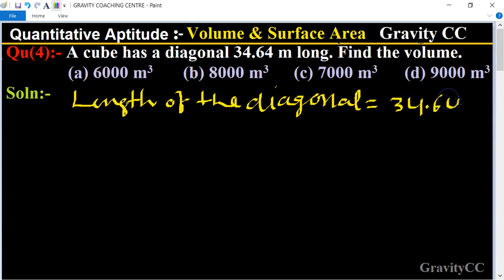34.64. And we know that the formula for the length of the diagonal of a cube is √3 × a equals 34.64.